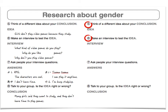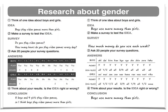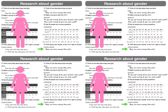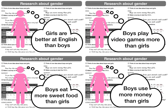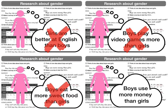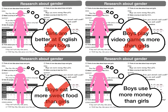First, look at your first worksheet. You will use your conclusion from your first worksheet. Look at the conclusions from all your group members. Choose the best conclusion — the conclusion that is most interesting. Your group will continue that research.